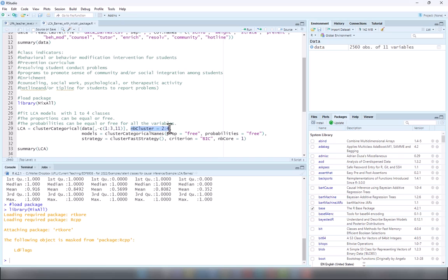but here we only have categorical indicators. I've specified the indicators, the number of clusters that I'm examining is 2 to 4, so the function automatically fits the latent class models with two classes, three classes,